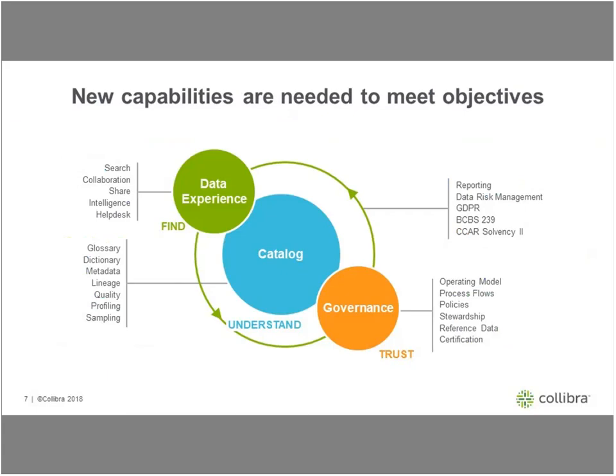How can end business users find and understand the data at their fingertips? Why should they trust what is being presented to them? A lack of trust leads to a lack of consumption or adoption, which is counterintuitive to becoming more data-driven. At Collibra, we see the solution as providing foundational governance with a strong operating model, sharing best practices, having set process flows and policies to ensure data can be trusted, and enabling data owners to certify their assets and create business value.